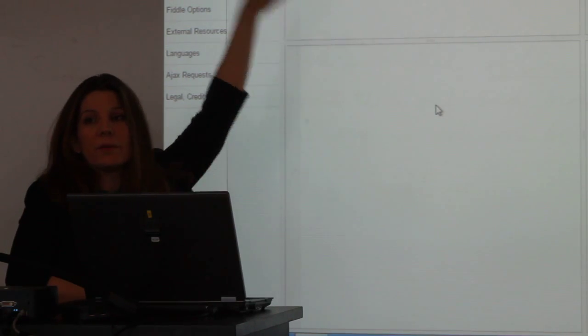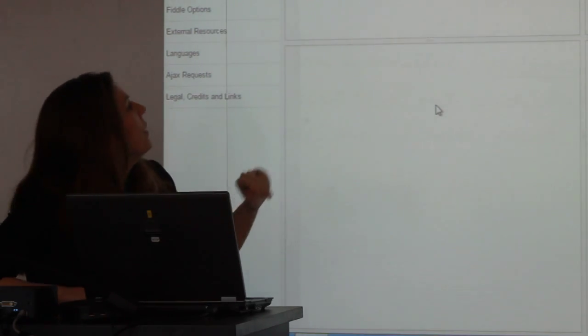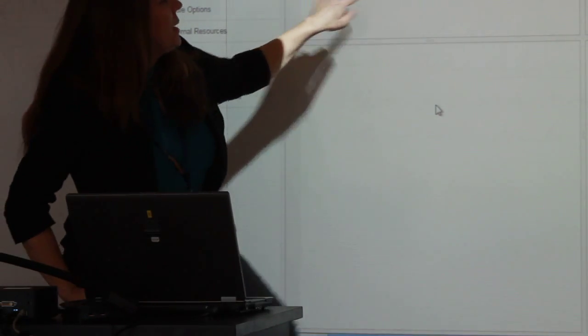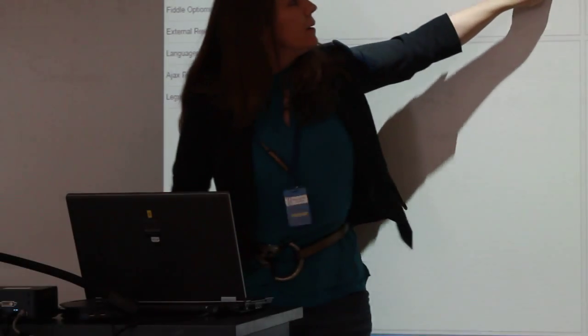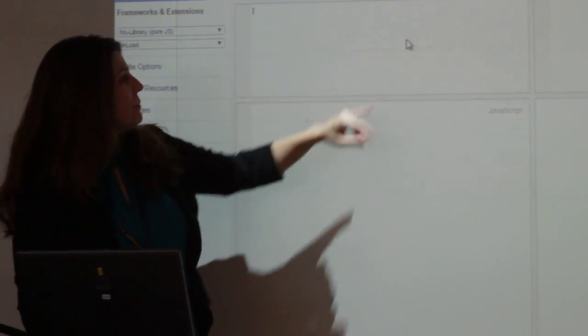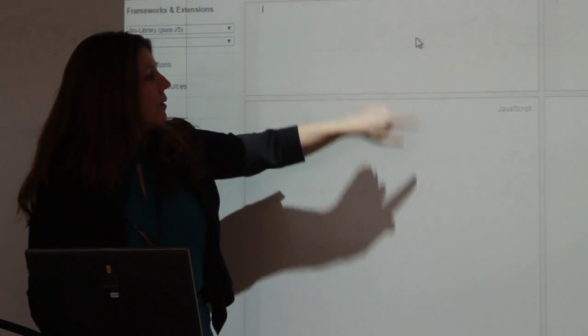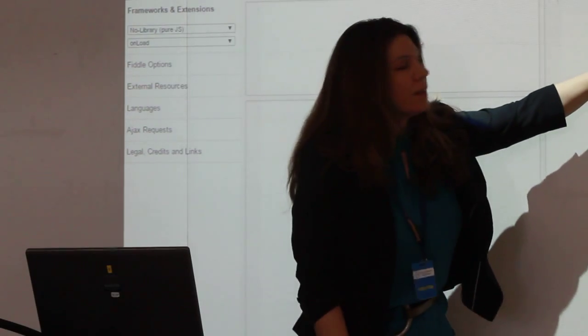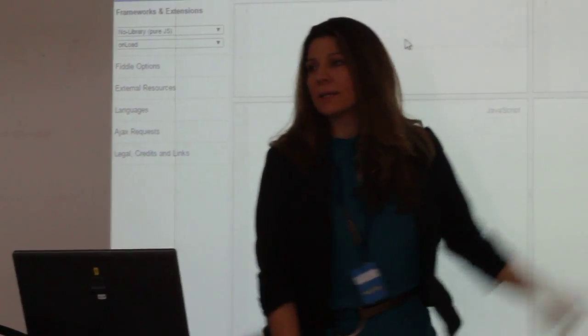Everybody raise your hand if you have this already. This quadrant is named what? HTML. That means we're going to type in HTML here. This quadrant — if I move my mouse away from it, now it shows. What does this show? JavaScript. And then the one on the right? CSS.